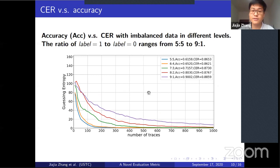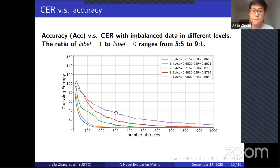With imbalanced data, the standard accuracy metric becomes very misleading as imbalance increases, whereas the cross entropy ratio metric remains faithful in reflecting the actual attack results.